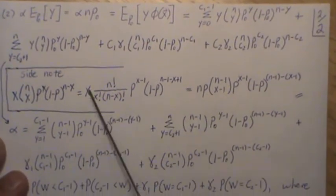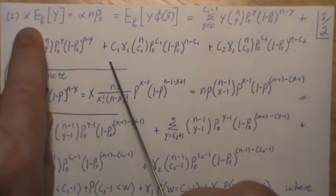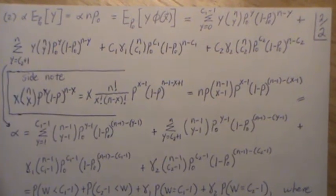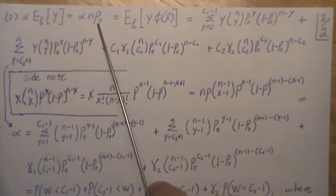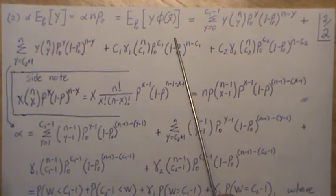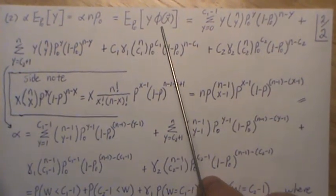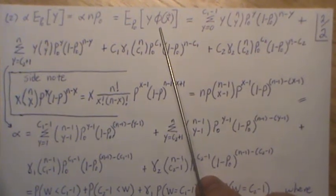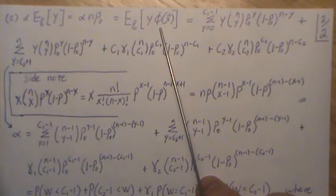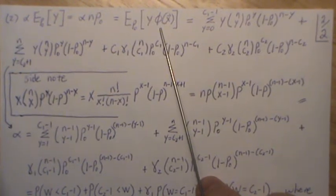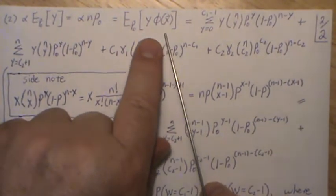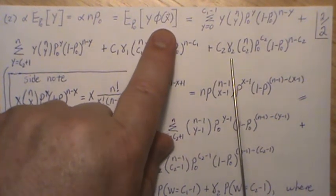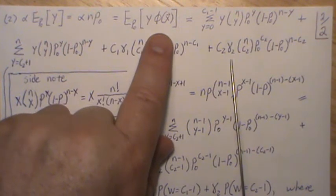Now to get back on track, we're going to solve for equation two right here. This equation is easy to solve for in the binomial setting because the expected value of y is np, so it's alpha np. Now this piece is y times the test function. Remember, the test function can take on the value zero, gamma two, gamma one, and one. So if we look at this going backwards, this is the gamma two part. When it's zero, it's zero and doesn't add to the equation.